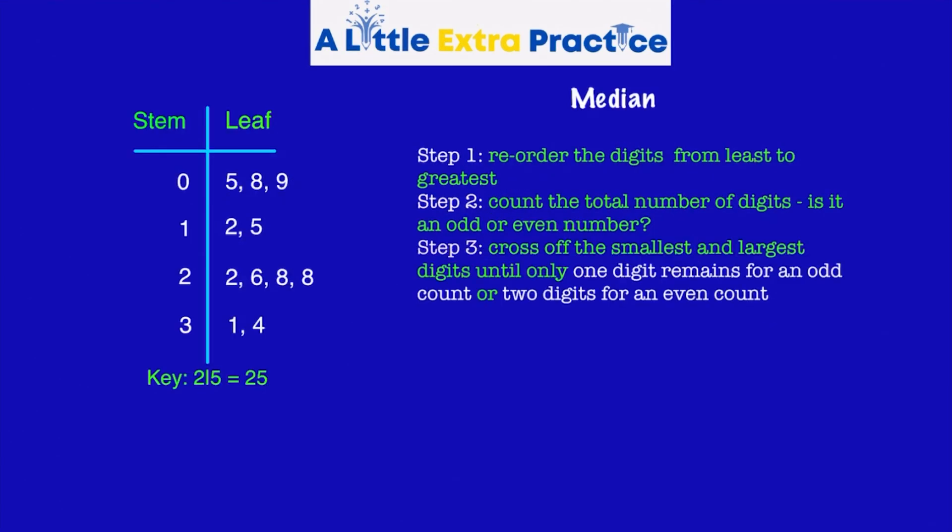Finding the median in a stem and leaf plot is no different than any other median problem. We'd have to make sure that the numbers are ordered from least to greatest. They are here. And those are the numbers in the ones, tens, 20s, and 34. Okay, step two.